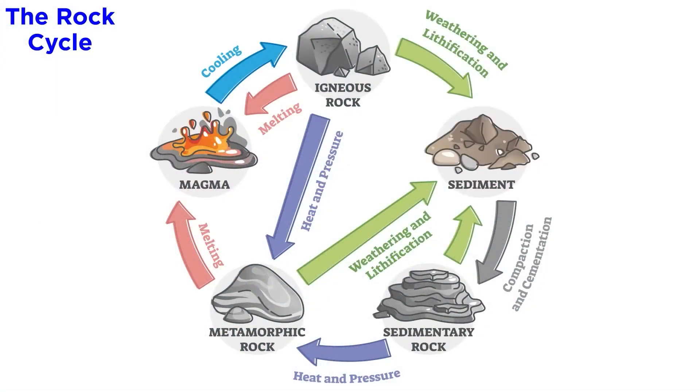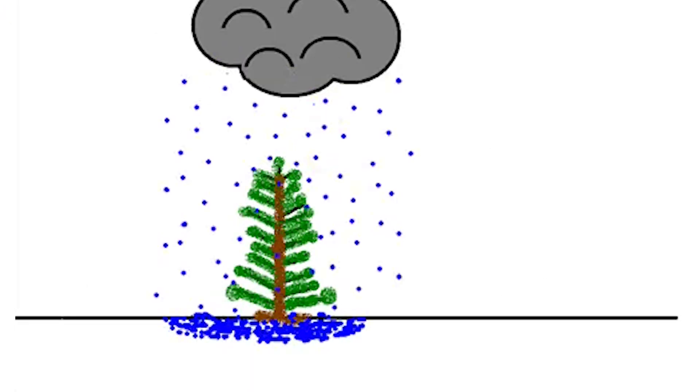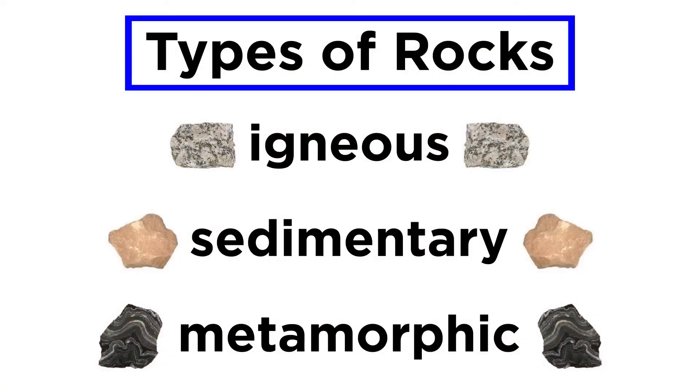So what exactly is the rock cycle? Imagine it like this: just as a tree goes through a cycle of growth, death and regrowth, rocks also go through their own cycle of formation, breakdown and reformation. This constant cycle transforms them into three main types of rocks: igneous, sedimentary and metamorphic.